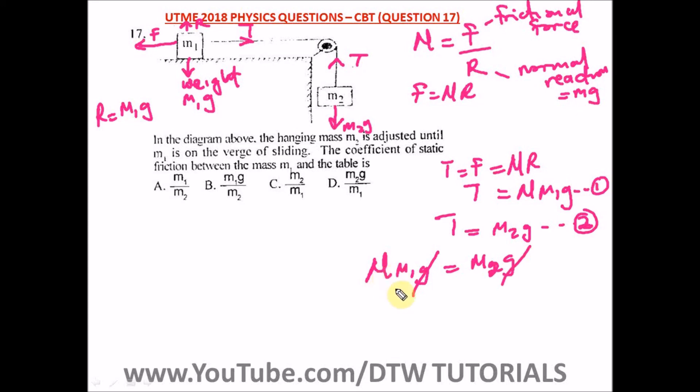And we are left with mu M1 equal to M2. Making mu the subject of formula, we divide both sides by M1. So we have mu is equal to M2 over M1.